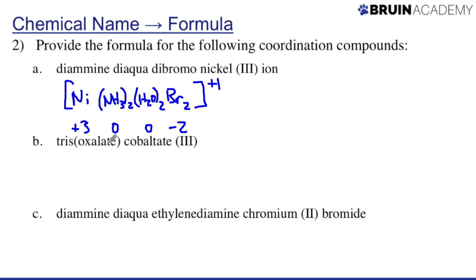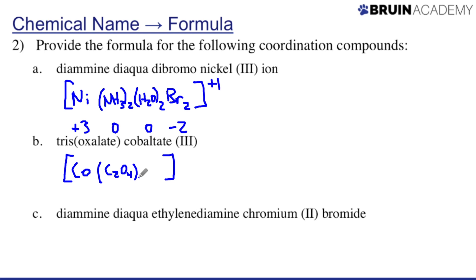For tris(oxalato)cobaltate(III): I write my brackets with cobalt as the transition metal. The only ligand is oxalate, which can be written as ox or C₂O₄²⁻. I have three of them — 'tris' because the ligand name itself has a numerical prefix. Oxalate has a minus two charge; three of them gives minus six. Cobalt is plus three. The overall charge is minus three, which is why '-ate' is used — the compound is an anion.